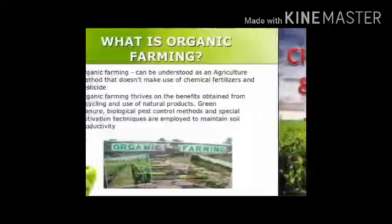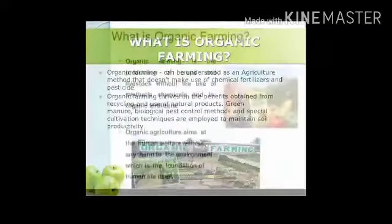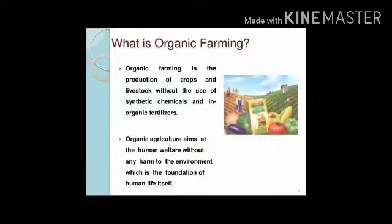What is organic farming? Organic farming is the form of agriculture that relies on crop rotation, green manure, compost, biological pest control and mechanical cultivation to maintain soil productivity and control pests. It excludes the use of synthetic fertilizers and pesticides.